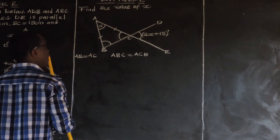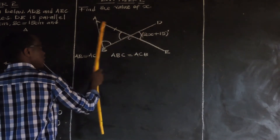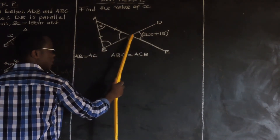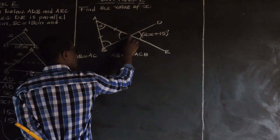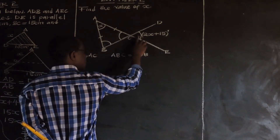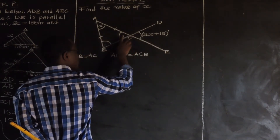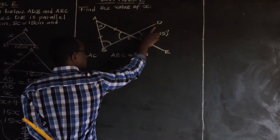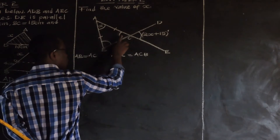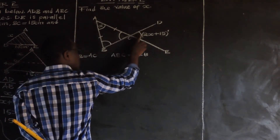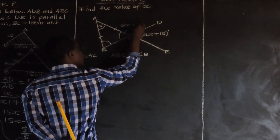Now, A, C, E and B, C, D are straight lines crossing. Vertically opposite angles are equal. So if angle DCE is 2X plus 15, then angle ACD is also 2X plus 15, because angle DCE and angle ACD are vertically opposite.